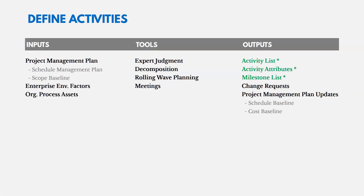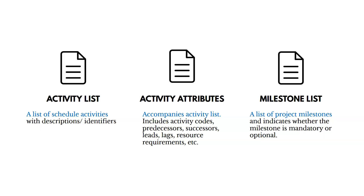The outputs of Define Activities are the activity list, activity attributes, and a milestone list. The activity list is simply a list of scheduled activities. Activity attributes accompany the list and include things like activity codes, predecessors, successors, leads and lags, and so on. The milestone list indicates whether each milestone is mandatory or optional. We could also see change requests and project management plan updates.